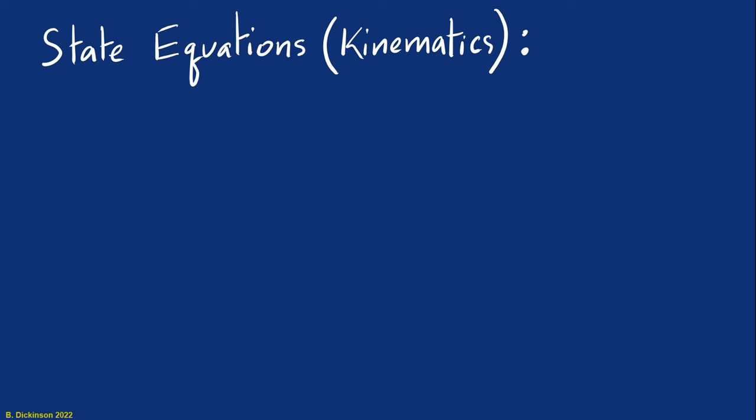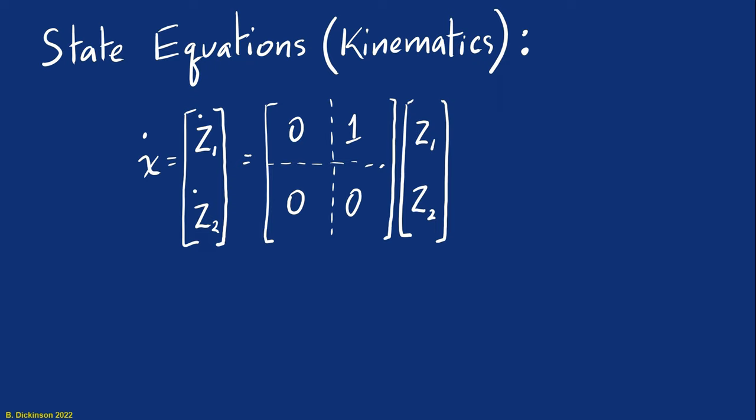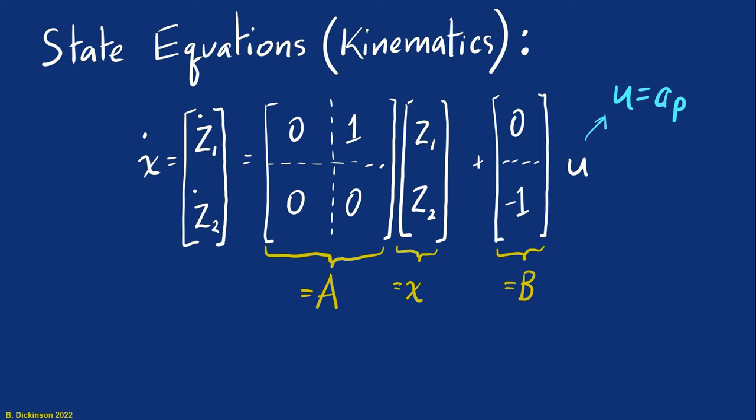Now taking our kinematic equations and writing them in matrix form, we simply have that X dot Z1 dot is equal to Z1 and Z2 dot, Z1 dot was Z2, we had that one, and then Z2 dot was equal to minus AP. Well, we need to add on an additional control input term to introduce the minus AP, and so here we do that, and don't forget that U is the AP variable. Now, this is a familiar form called a linear time-invariant system. It's denoted often X dot as AX plus BU, and it's going to be a very convenient thing to work with as we develop our problem statement and then attempt to solve the optimization problem.